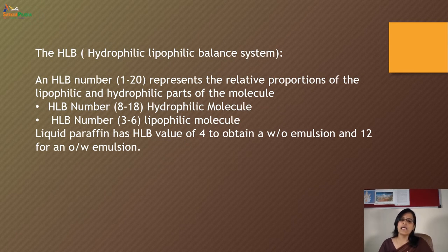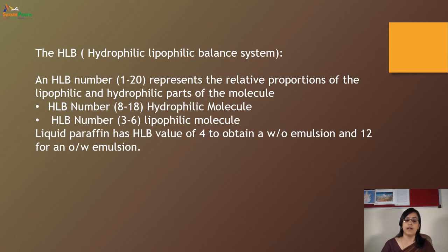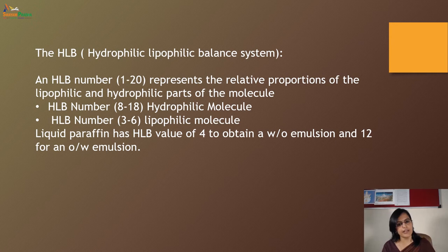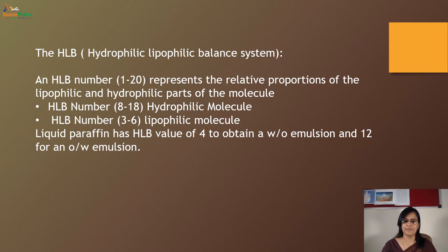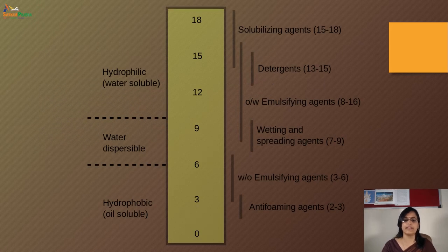The HLB (Hydrophilic-Lipophilic Balance) system: HLB numbers range from 1 to 20 and represent the relative proportions of the lipophilic and hydrophilic parts of molecules. HLB numbers from 8 to 18 indicate hydrophilic molecules, and HLB numbers from 3 to 6 indicate lipophilic molecules. Liquid paraffin has an HLB value of 4 to obtain a water-in-oil emulsion, and 12 for an oil-in-water emulsion. This slide shows the HLB values of different types of emulsifying agents.